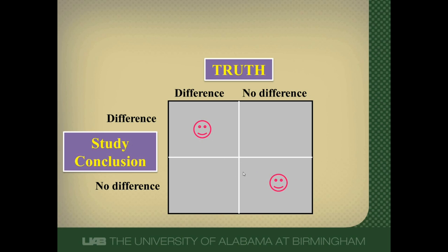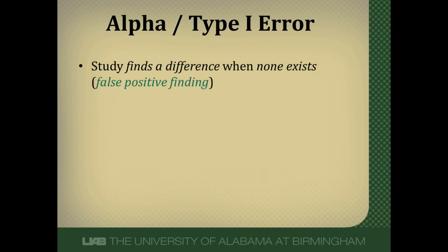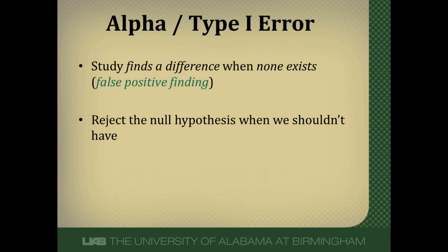We're in great shape when our study found a difference when one truly exists — this is the power of a study — or when our study found no difference and no difference really exists. The problem is when we're in the other two boxes. For the remainder of this video we'll focus on alpha or type 1 errors, which is when our study finds a difference when no difference exists. An alpha or type 1 error — a false positive study — is technically when we reject the null hypothesis when we shouldn't have.